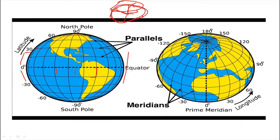The length of each parallel reduces as they approach the pole, but their angular value increases as they go from the equator towards the poles — for example, 30 degrees south, 60 degrees south, and so on. The equator is the largest of all circles and is also called a great circle. Its circumference spans 360 degrees. The equator divides the Earth into two equal hemispheres: the northern hemisphere and the southern hemisphere.